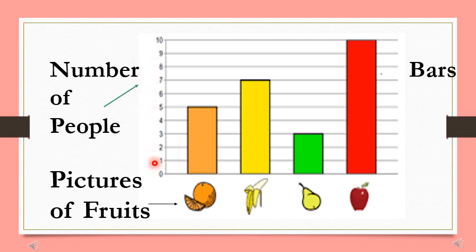These numbers here represent how many people like each fruit. Let's take a look. Let's look at the fruit banana. Use your finger to see where the bar stops, and then follow the line until you get to the number. How many people like bananas? Good job, seven people like bananas. Pretty easy right, let's go on.